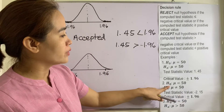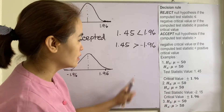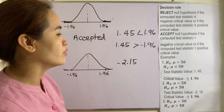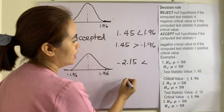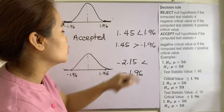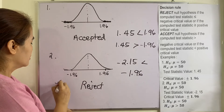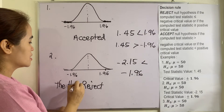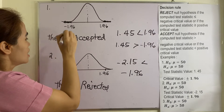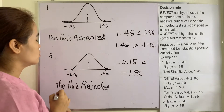Example 2: The null hypothesis is that the mean equals 50, and the alternative is that the mean is not equal to 50. The test statistic is negative 2.50. Comparing it with the critical value of negative 1.96: negative 2.50 is less than negative 1.96, so it falls under the rejection decision rule. Therefore, the null hypothesis is rejected. The rejection region is indicated on this side.